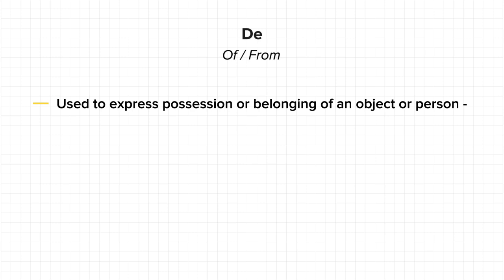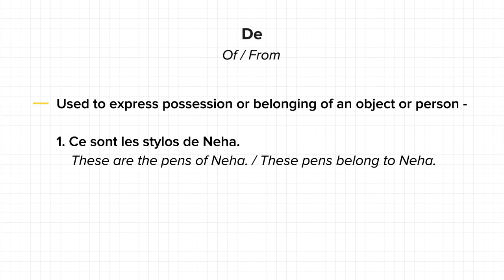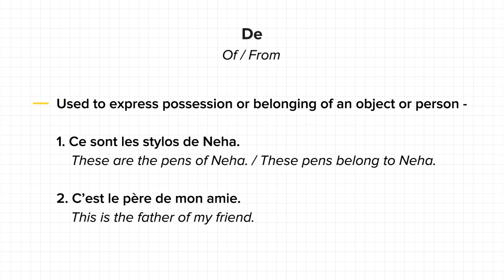Coming to the next usage of 'de': it can also be used to express possession or belonging of an object or a person. Imagine the pens I have belong to Neha — I would say 'Ce sont les stylos de Neha'. Or, if I wish to tell that this is the father of my friend, I would say 'C'est le père de mon ami'. See, we are using 'de' as 'of' in these examples.